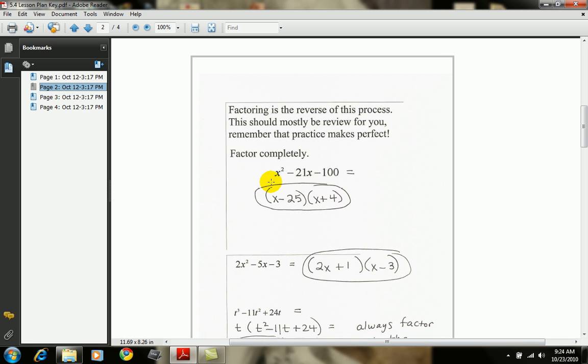Let's look at this top example. If I was asked to factor the expression x squared minus 21x minus 100, the first thing I look for is a greatest common factor, but the greatest common factor here is just a 1. In other words, the most you could pull out of all three terms would be a 1.